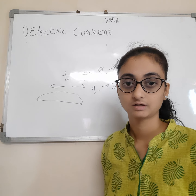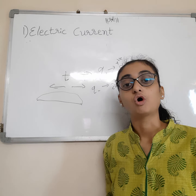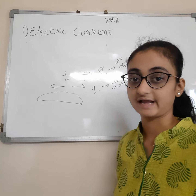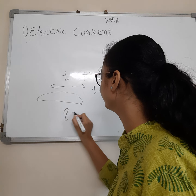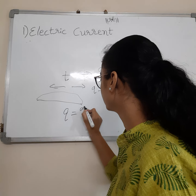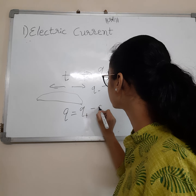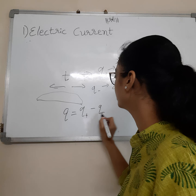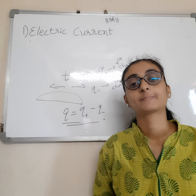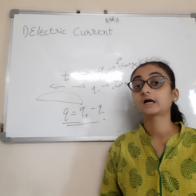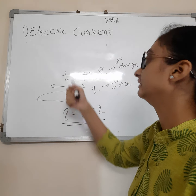We will see electric current or kinds of current in day to day life. Lightning is also a kind of current but it is not a steady current. If we say steady current, we see a slowly flowing river, or a torch, as examples of steady current.